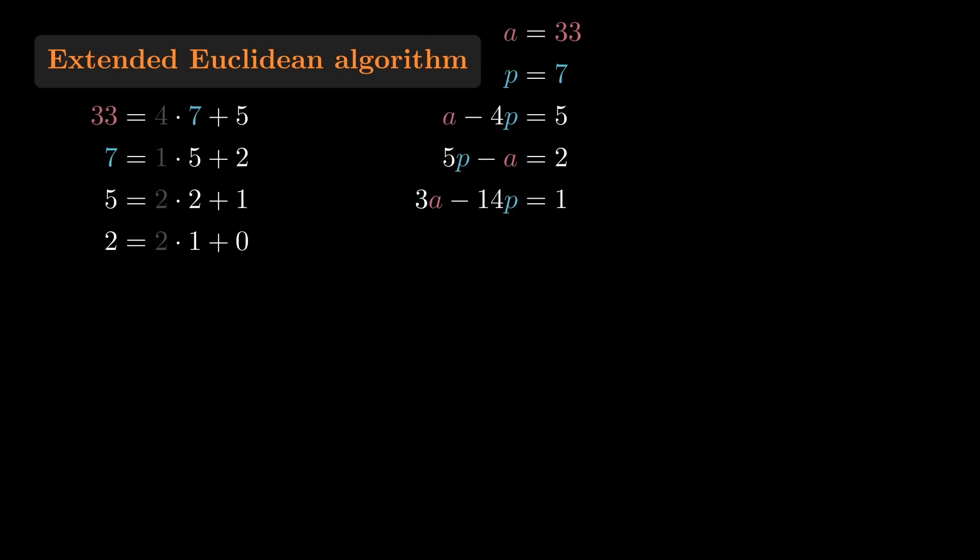And that was the goal, a single equation involving A and P and their GCD. Specifically, 3 times 33 minus 14 times 7 equals 1.